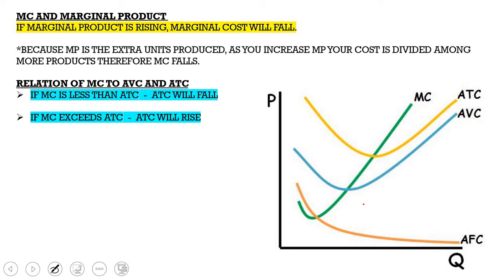Regarding the relationship between marginal cost and marginal product: if marginal product is rising, marginal cost will fall, because as you increase marginal product, your cost is divided amongst more products. Marginal cost only includes costs that change with output — total cost and variable cost — which is why the MC curve does not intersect the average fixed cost curve, since fixed costs do not change with output.